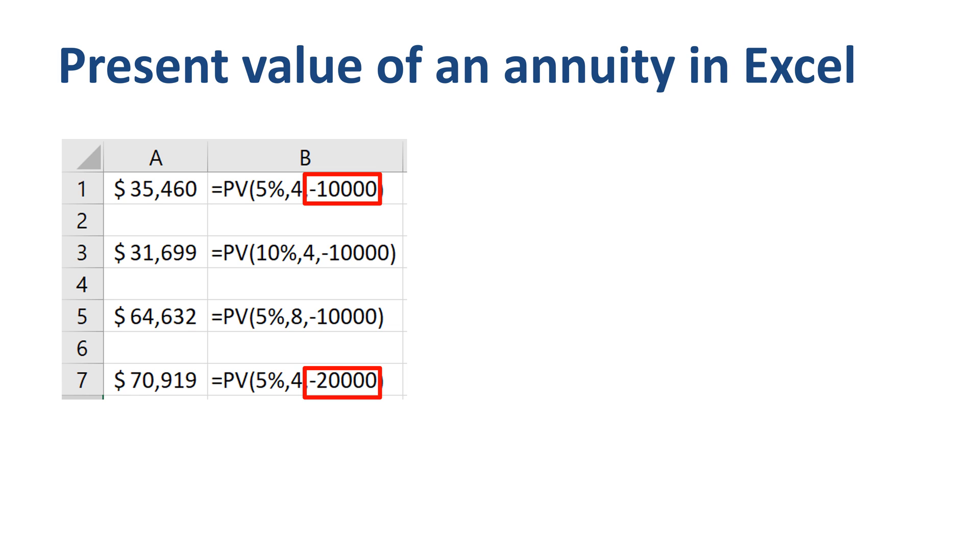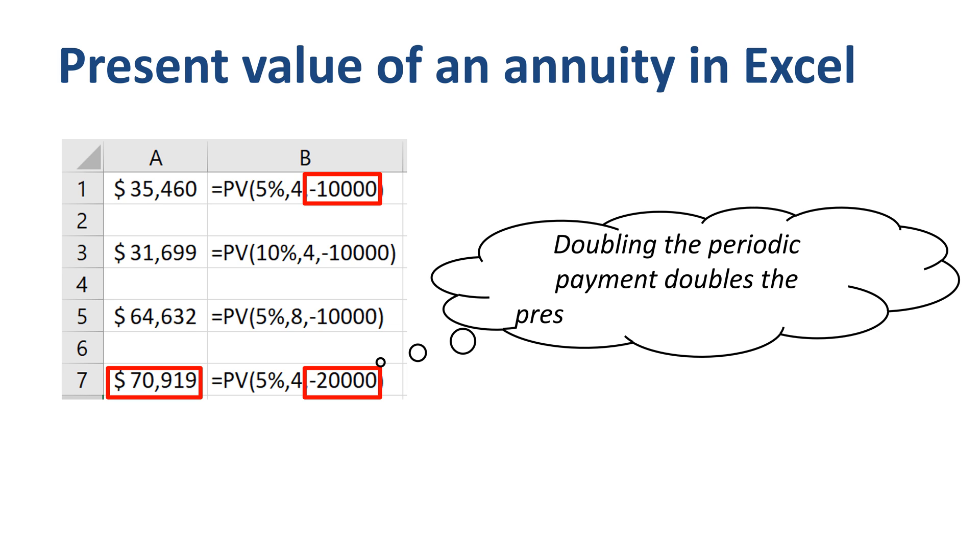What about doubling each of the future payments, from $10,000 per period to $20,000 per period? This does increase the present value of the annuity proportionally, it doubles to $70,990.